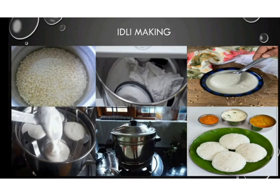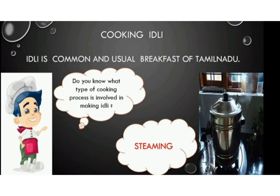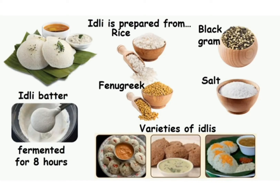Idli is prepared using an idli cooker. First, rice and black gram is soaked in water for about 4 to 5 hours. Then the soaked rice is ground. The batter — in Tamil: maavu — is allowed to ferment (in Tamil: pulikevaithal) for 8 hours. Then the batter is poured into the idli plate and steamed in the idli cooker for about 7 minutes.